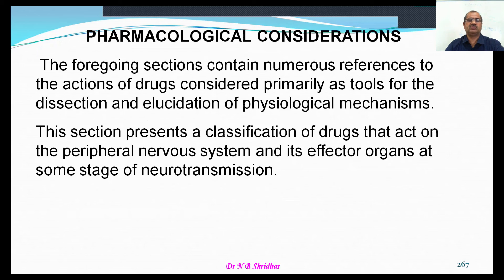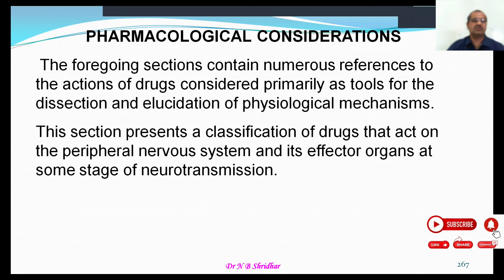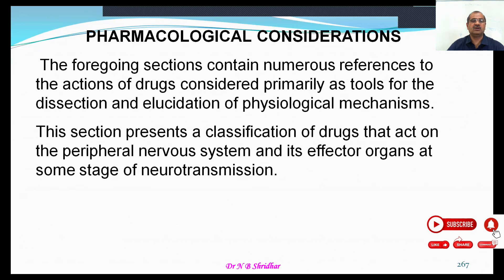We have understood the different steps of how a nerve impulse is generated and how it is transmitted — axonal conduction — and then junctional transmission. All these processes occur under normal physiological conditions. As pharmacologists, our interest is in how we can intervene in these processes to get the desired pharmacological effect. This section presents a classification of drugs that act on the peripheral nervous system and its effector organs at some stage of neurotransmission.